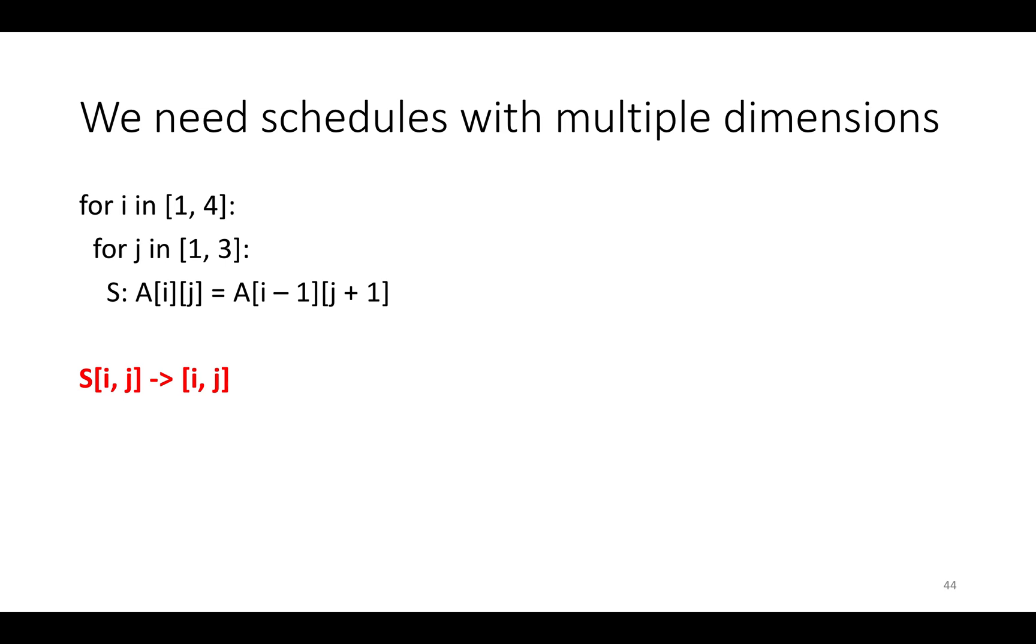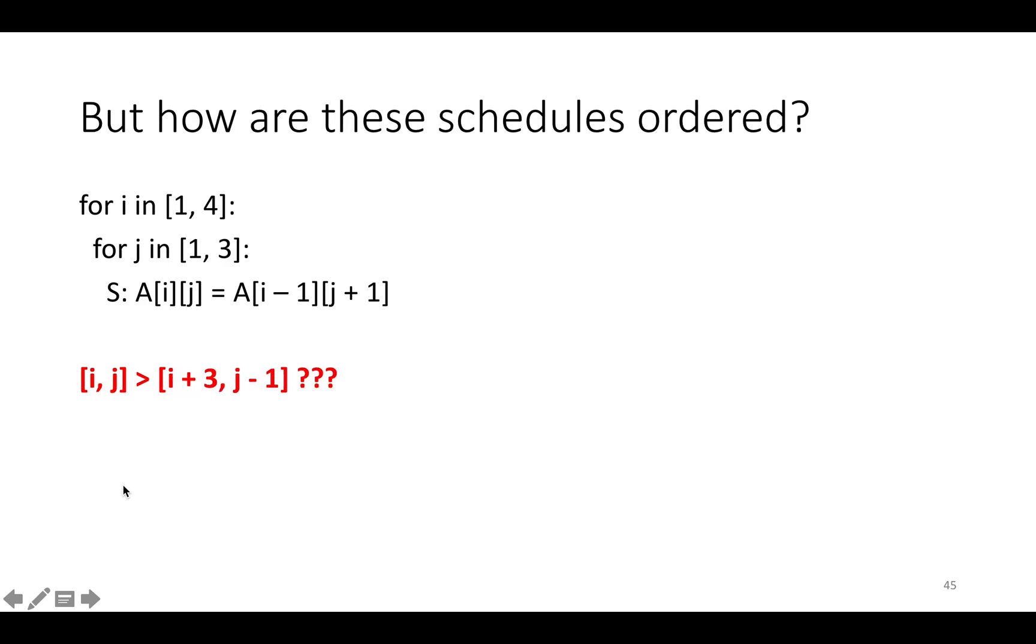So we now need to describe the schedule before we can do our encoding in integer linear programming. And in our schedule, we're going to need to have multiple dimensions because there's multiple loop levels. But how are these schedules ordered? When a schedule is one-dimensional, it's just obvious that in one-dimensional time, i is greater than j if the number i is greater than j in the conventional sense that we learn in algebra.